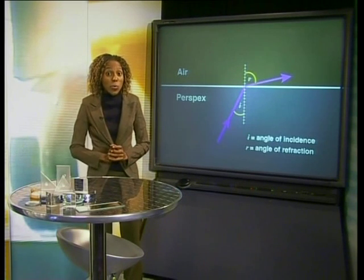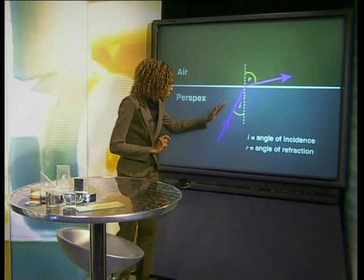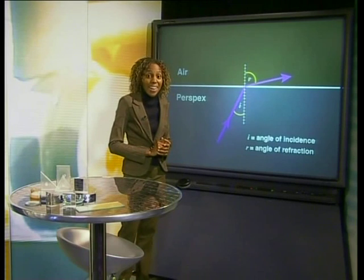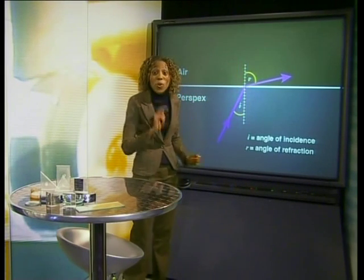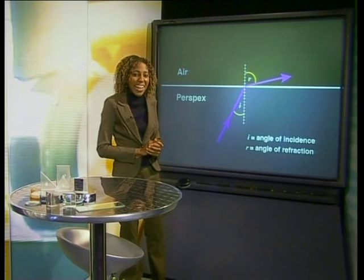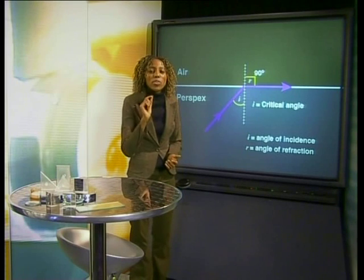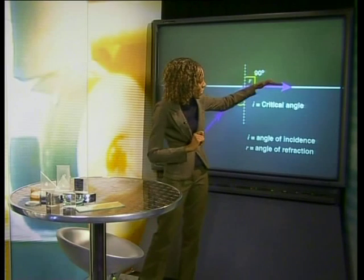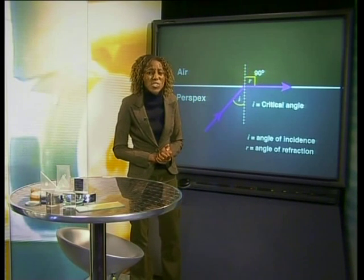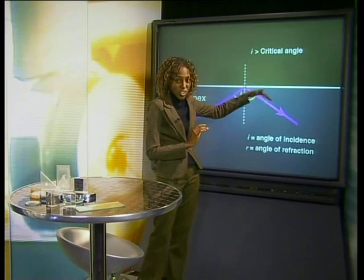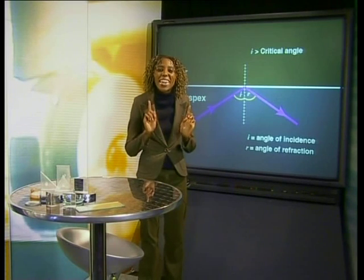Let's draw ray diagrams to illustrate what we have just seen. We are only going to draw what happens at the boundary between the perspex and the air. When the light hits the boundary at an angle of incidence which is less than the critical angle, the light will be refracted. It is refracted away from the normal because the light speeds up. If the light hits the boundary at an angle of incidence which is equal to the critical angle, the light is still refracted away from the normal, but it is refracted so far from the normal that it runs parallel to the boundary. The angle of refraction is now 90 degrees. Once we have an angle of incidence that is greater than the critical angle, the light is refracted so much that it cannot leave the medium. This results in the light being reflected. This is called total internal reflection.